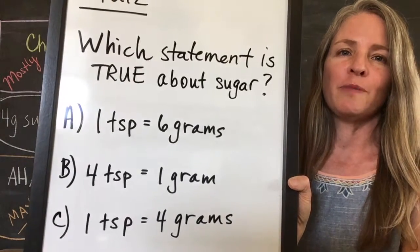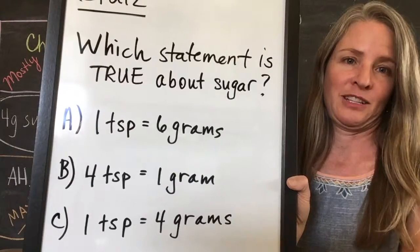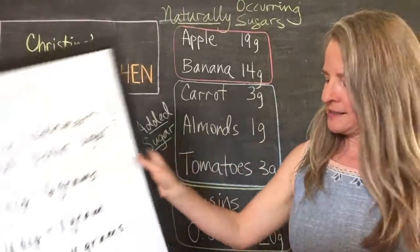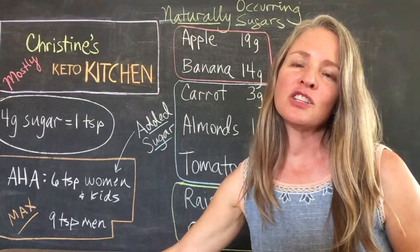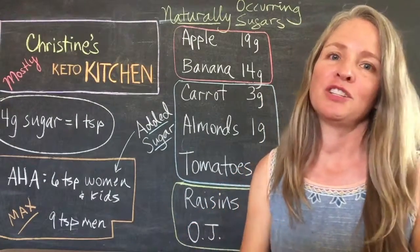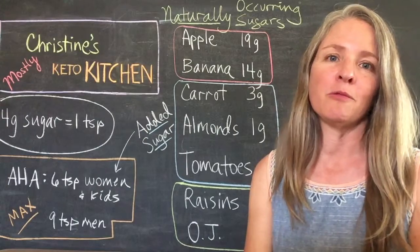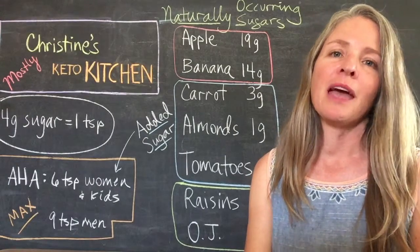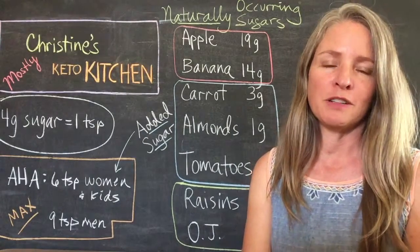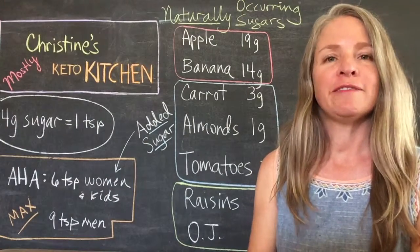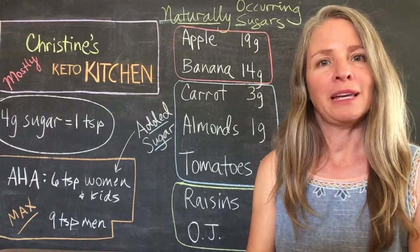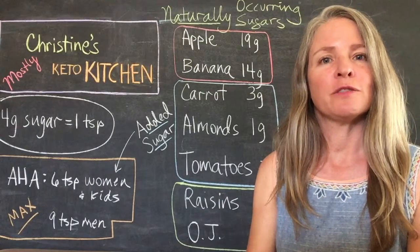If you've been watching, you'll know that the answer is C. I think this is important because it's good to be able to read labels and interpret how much sugar is in the food that we're eating. For example, if a label says 24 grams of sugar, you can divide by four, and that will tell you how many teaspoons of sugar that is.